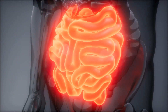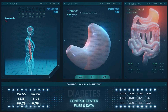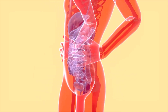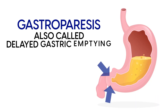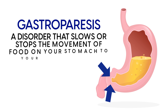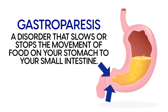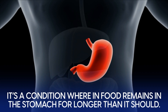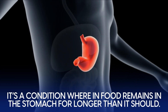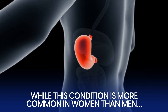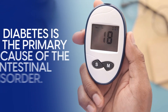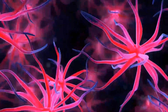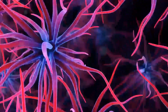Diabetes can also bring more obvious intestinal problems, such as constipation and gastroparesis. Gastroparesis, also called delayed gastric emptying, is a disorder that slows or stops the movement of food from your stomach to your small intestine, even though there is no blockage in the stomach or intestines. It's a condition wherein food remains in the stomach for longer than it should. While this condition is more common in women than in men, diabetes is the primary cause of this intestinal disorder. This is because diabetes can damage the vagus nerve, which regulates the digestive system and its bacteria.